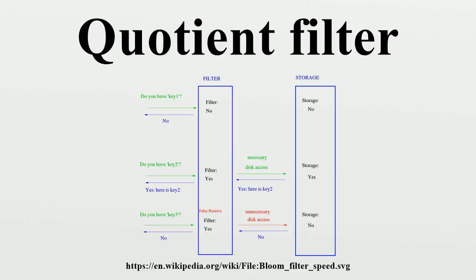In a quotient filter, a hash function generates a P-bit fingerprint. The R least significant bits are called the remainder, while the Q = P - R most significant bits are called the quotient. Hence the name 'quotienting'. The hash table has 2^Q slots. For some key D which hashes to fingerprint DH, with quotient DQ and remainder DR, the QF will try to store the remainder in slot DQ, which is known as the canonical slot. However the canonical slot might already be occupied because multiple keys can hash to the same fingerprint (a hard collision), or because even when the keys' fingerprints are distinct they can have the same quotient (a soft collision).